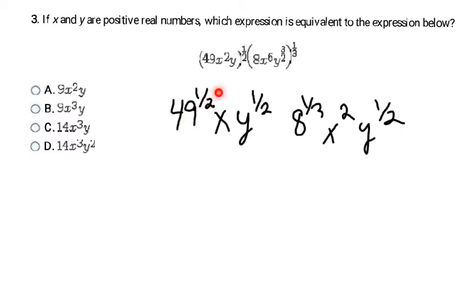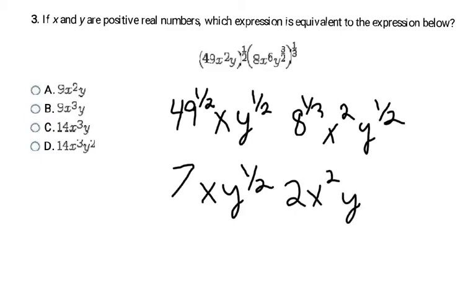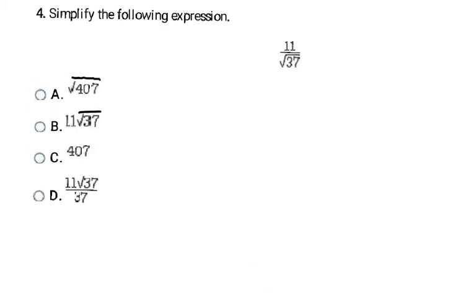Now I simplify the number parts. 49 to the one half is the square root of 49, which is 7. Then I have x and y to the one half. The one third is the cube root, and the cube root of 8 is 2. Then I finish the multiplication: 7 times 2 is 14. x times x² adds exponents giving x³. y to the one half times y to the one half: one half plus one half is 1, so y to the first. Final answer is C.